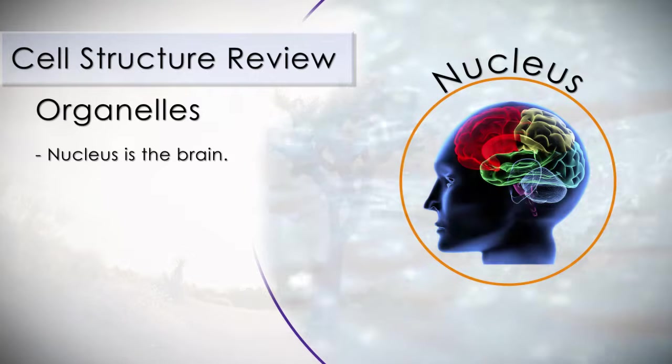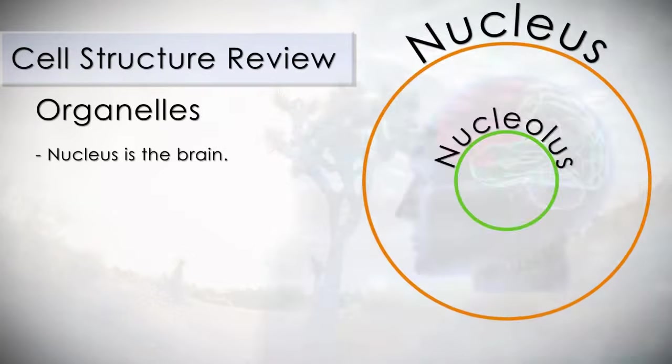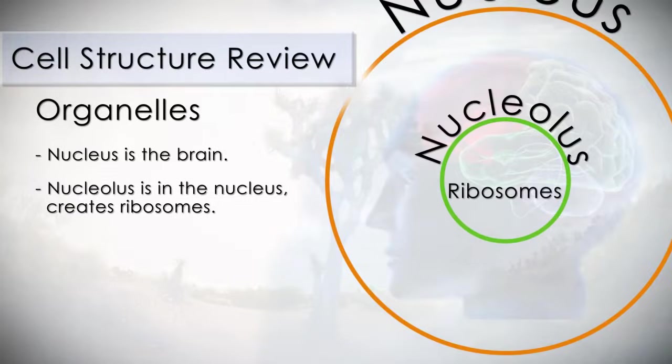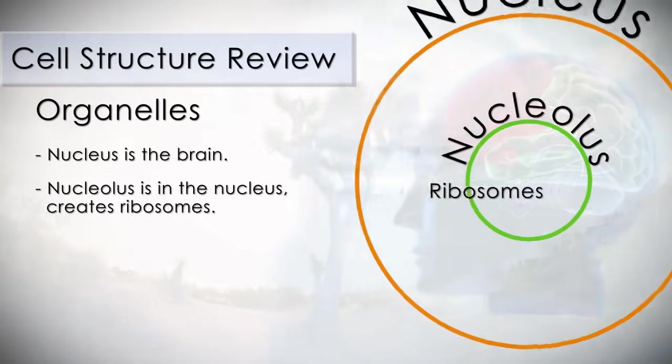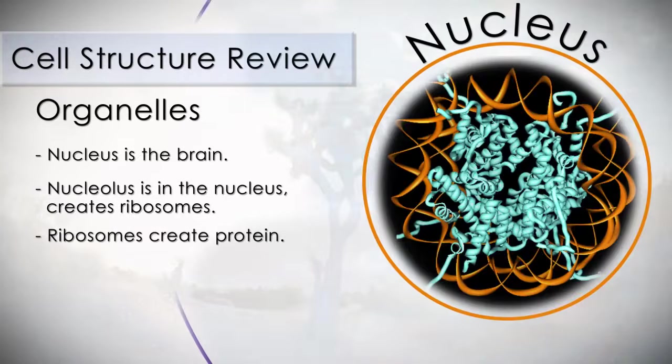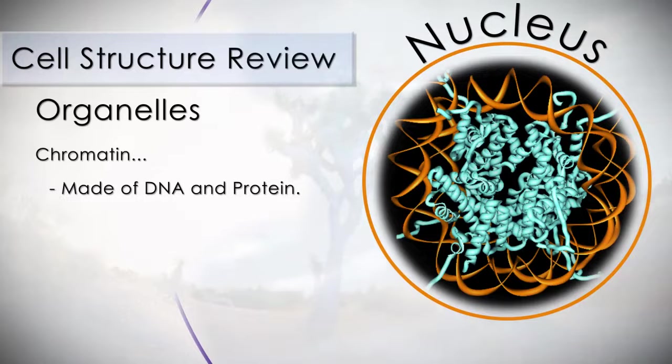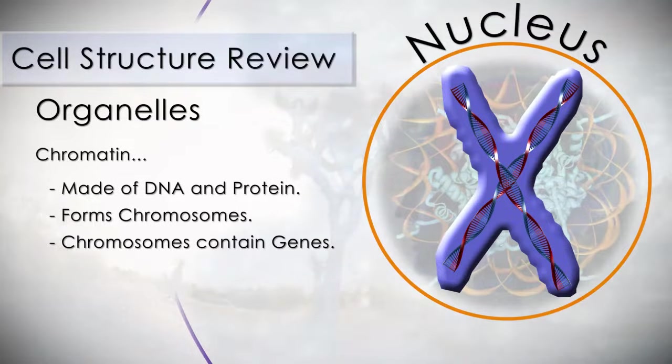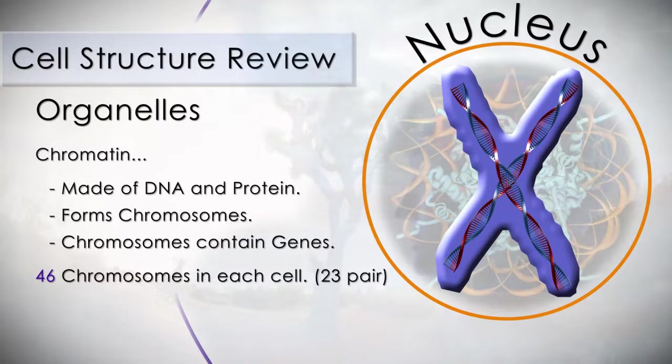The nucleus is the brain of the cell. The nucleolus is located within the nucleus and creates ribosomes. Ribosomes move from the nucleus to the cytoplasm where they serve as sites for protein synthesis. Chromatin is a thread of DNA and protein which together form chromosomes that contain the genes. There are 46 total chromosomes in each human cell.